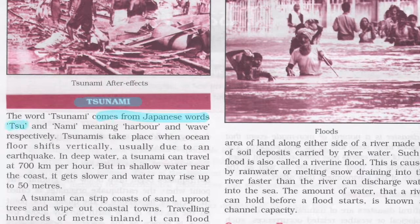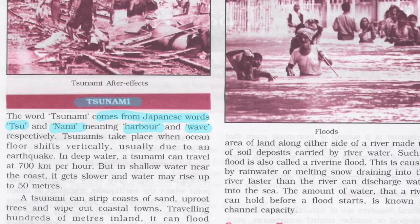The word 'tsunami' comes from the Japanese words 'su' meaning harbor and 'nami' meaning wave. A tsunami takes place when the ocean floor shifts vertically, usually when the ocean floor faces an earthquake. When an earthquake occurs at the bottom of the sea, the ocean floor shifts vertically and causes a tsunami.